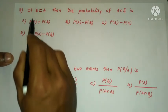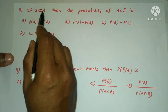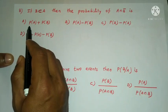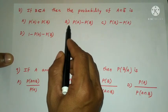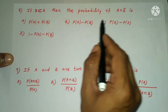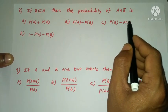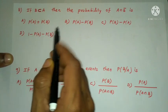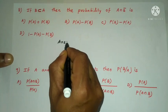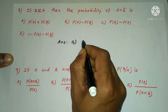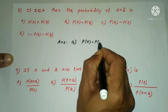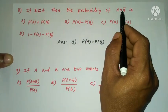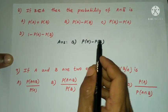Next question: if B contains A, then the probability of A intersection B complement. Options: P(A) + P(B), P(A) − P(B), P(B) − P(A), or 1 − P(A) − P(B). If B contains A, then A intersection B complement — the answer is P(A) minus P(B).